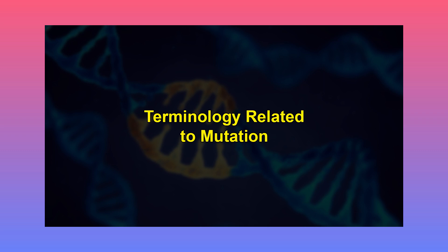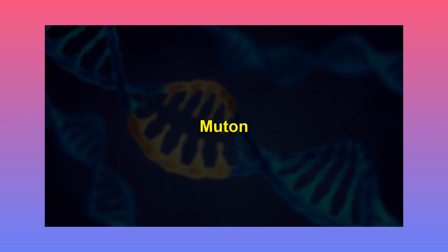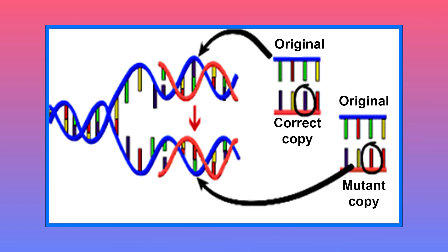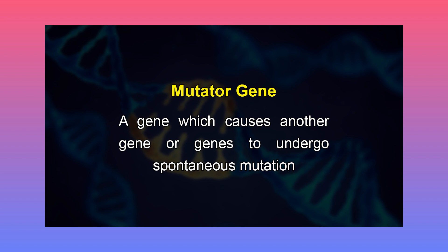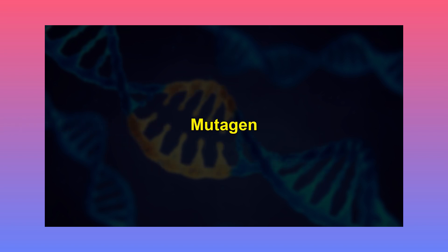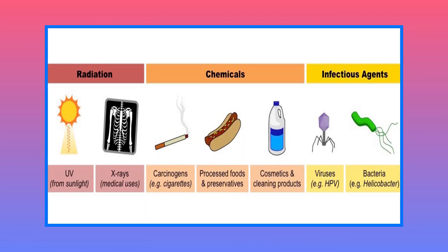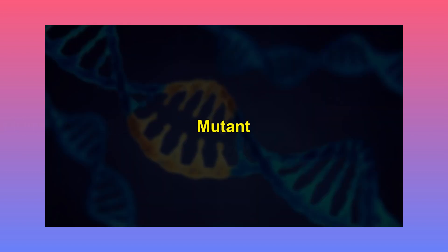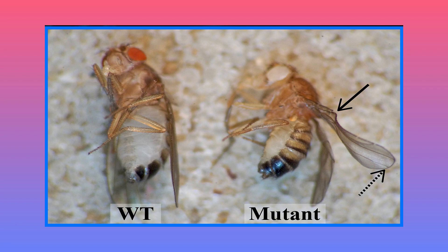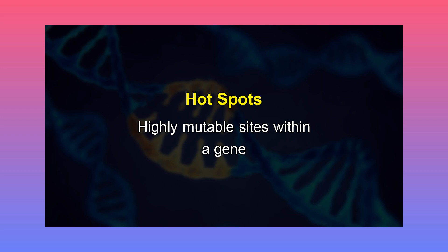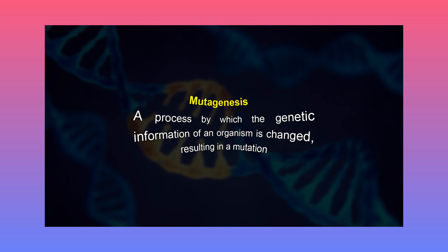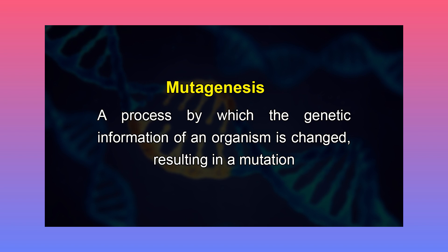Let's understand the terminology related to mutations. First, the muton: the smallest unit of a gene capable of undergoing a change or mutation, represented by a nucleotide. Mutator gene: a gene which causes another gene or genes to undergo spontaneous mutation. Mutagen: a physical, chemical or biological agent which induces mutation. Mutant: an organism or a new genetic character arising or resulting from an instance of mutation. Hotspots: highly mutable sites within a gene. Mutagenesis: a process by which the genetic information of an organism is changed resulting in a mutation.